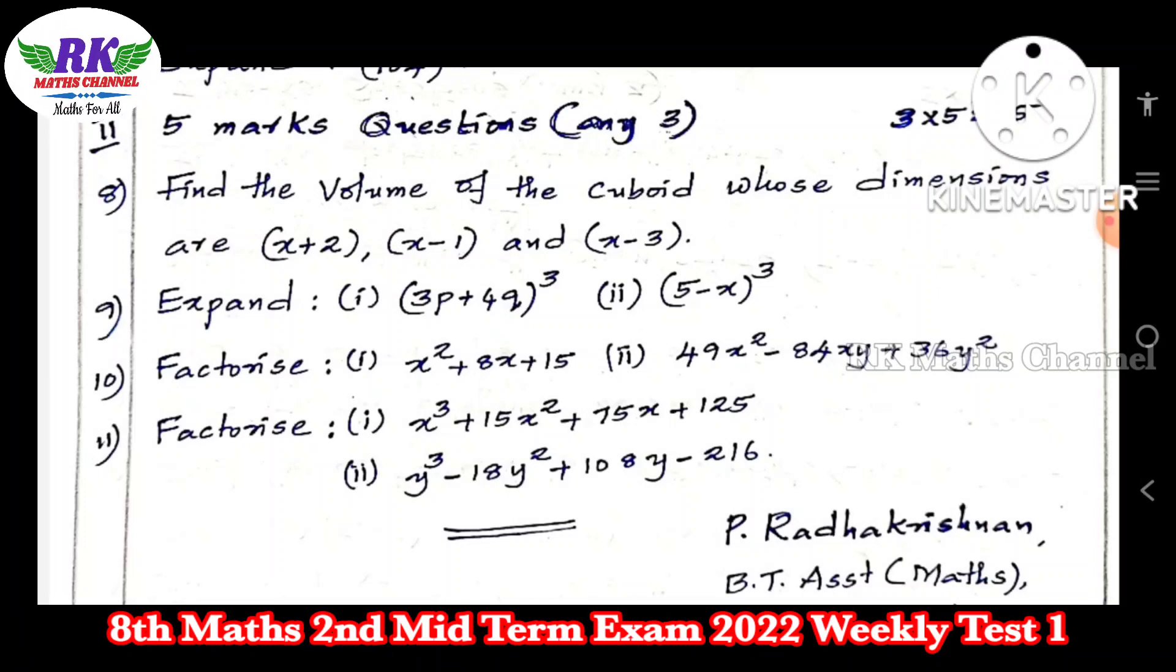Then volume is L × B × H. What formula? (x + 2)(x - 1)(x - 3). And the identity is used.